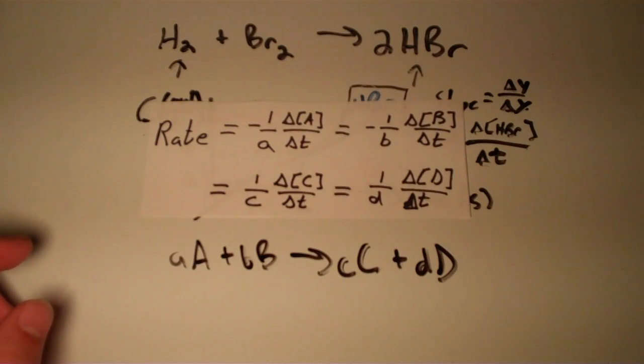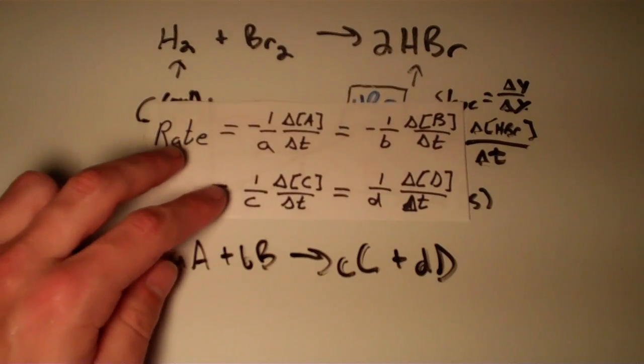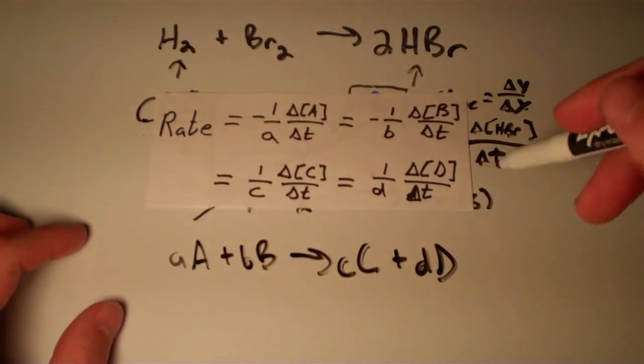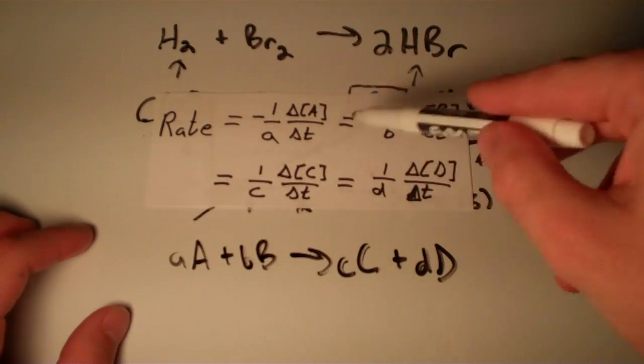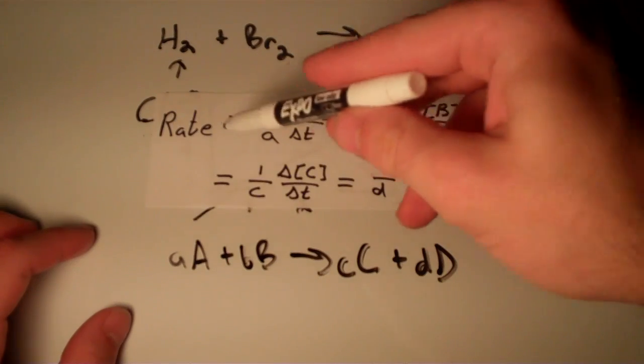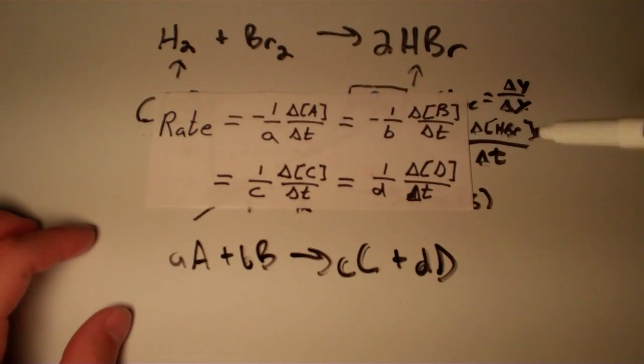This equation says that rate equals negative 1 over a times delta concentration of A over delta t, which equals negative 1 over b times delta concentration of B over delta t, which equals 1 over c times delta concentration of C over delta t, which equals 1 over d times delta concentration of D over delta t. Based on this equation, there's actually a variety of ways that you can get the rate. Notice that these are all equivalent quantities provided that you have the balanced chemical equation. Once you have a couple of parameters, you don't really need to know everything about all the other reactants or products—you can just deduce the rate from one.